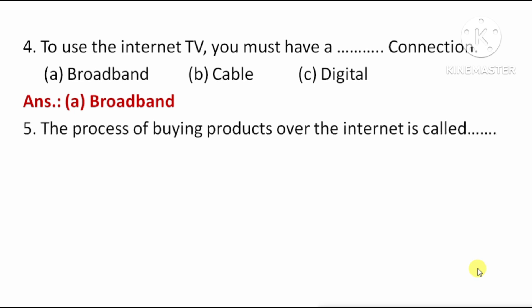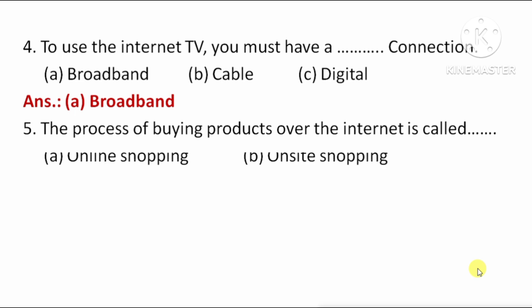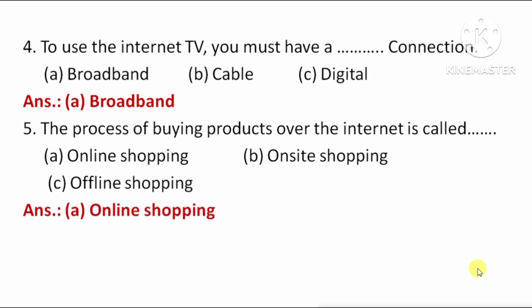Next question: The process of buying products over the Internet is called — means Internet par products ko kharidne ke process ko kehte hain. Option A: Online Shopping. Option B: On-Site Shopping. Option C: Offline Shopping. The right answer is Option A, Online Shopping.